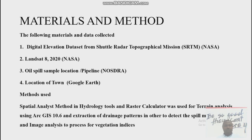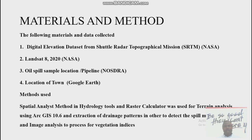In this case, we are not talking about monitoring — we are talking about the migration pattern of this spill. The method uses spatial analysis in hydrology tools, with the help of Raster Calculator, to perform terrain analysis using ArcGIS 10.6, track the drainage pattern to detect oil spill migration, and process image analysis for vegetation indices.